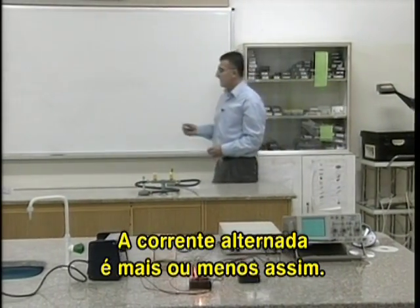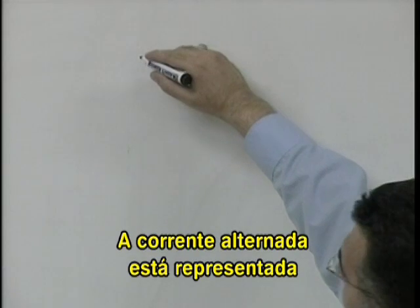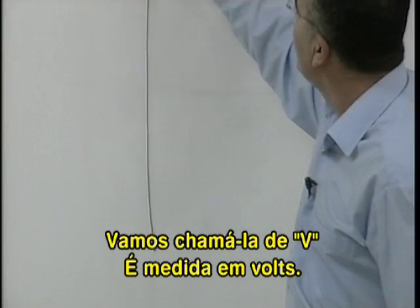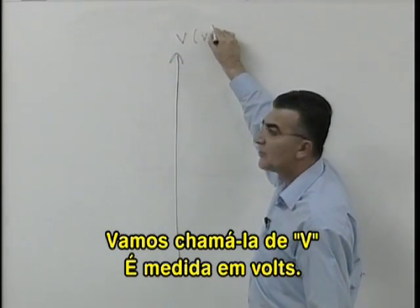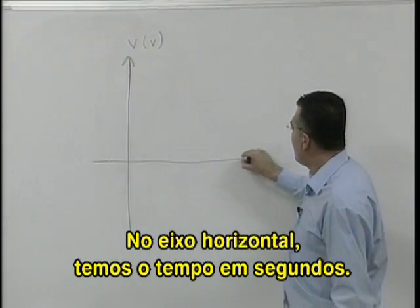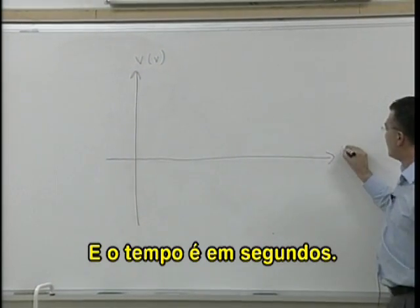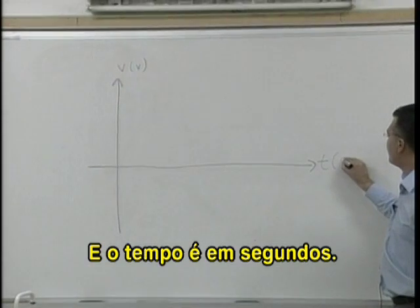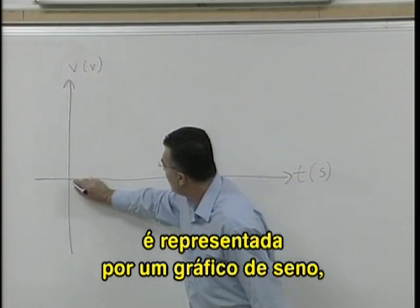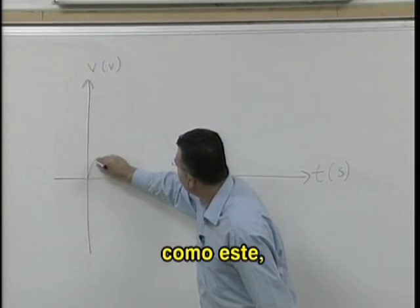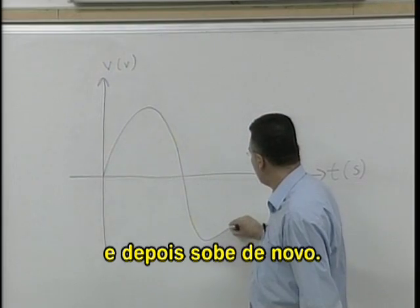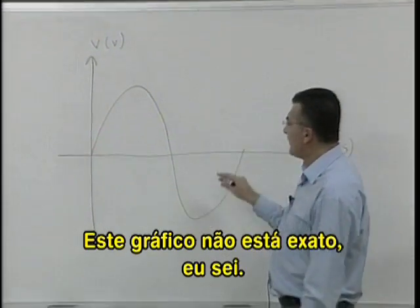An AC voltage is something like this. The AC voltage is on the vertical axis — let's call it V, measured in volts. On the horizontal axis, we have the time in seconds. An AC voltage is a signal which is a sine signal like this. It goes up and then down and then up again. This is very approximate, I know.